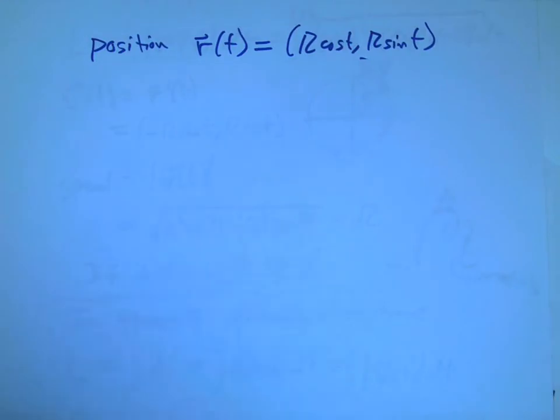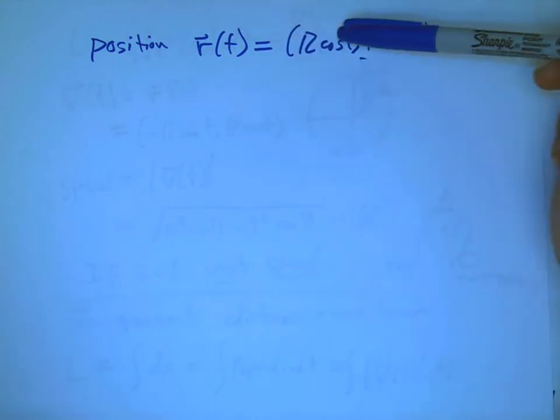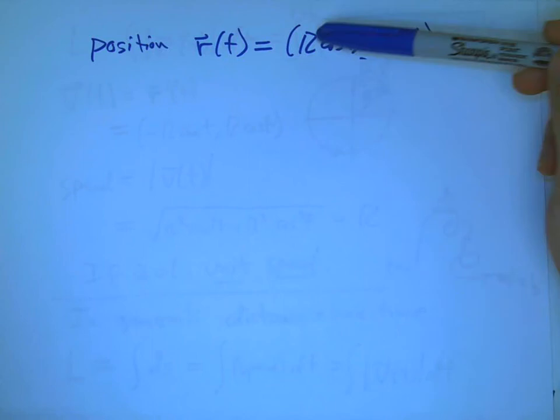So we have a curve, and I'm going to use r(t) for the curve. It's going to sync up well with the photocopies I'm going to do out of a different book for this stuff. And my first example is a circle of radius r: r cosine t, r sine t.